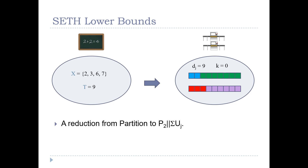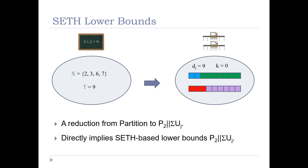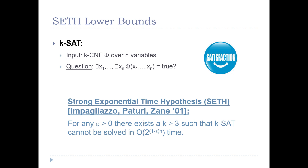What we saw is a reduction from subset sum or partition to our scheduling problem, where each integer is mapped to the processing time of a unique job, and the due dates are set to the target of the partition instance. This is a direct reduction between the two problems and, as we will soon see, it directly implies a SETH-based lower bound for the problem.